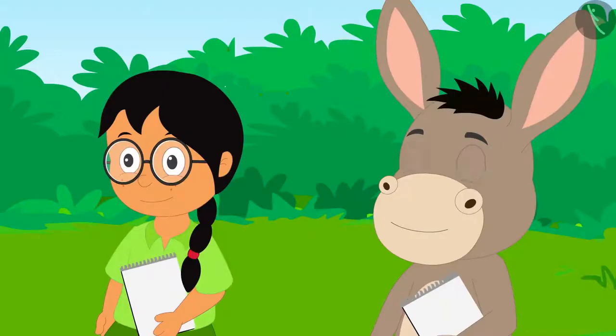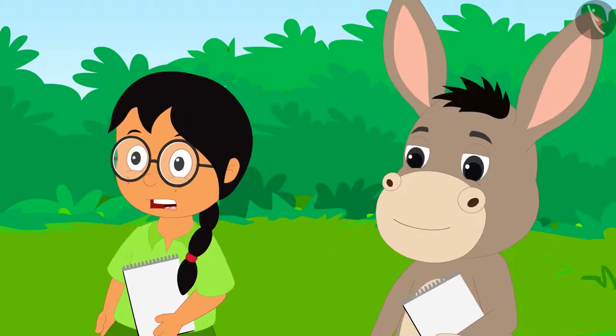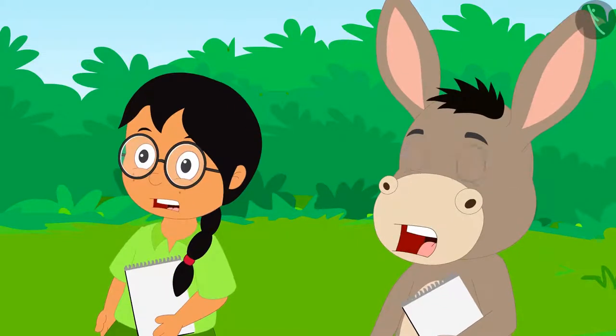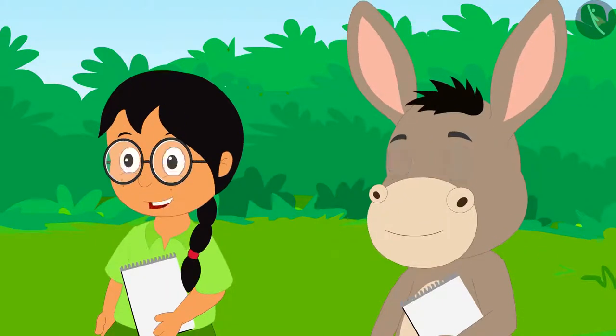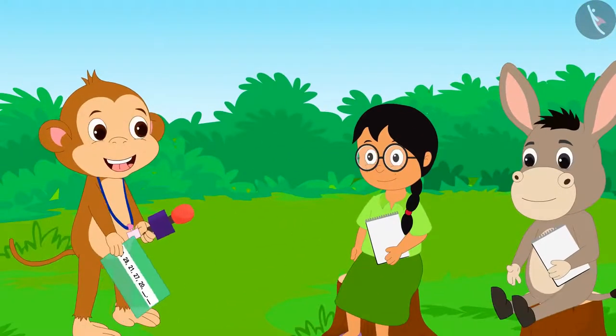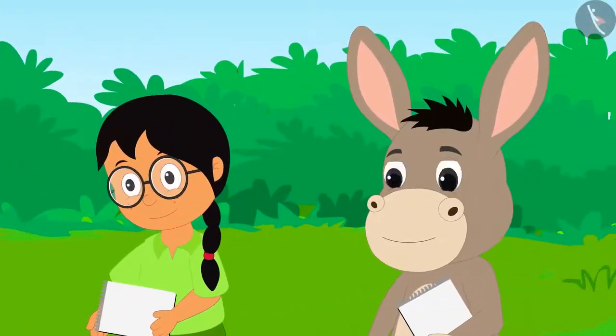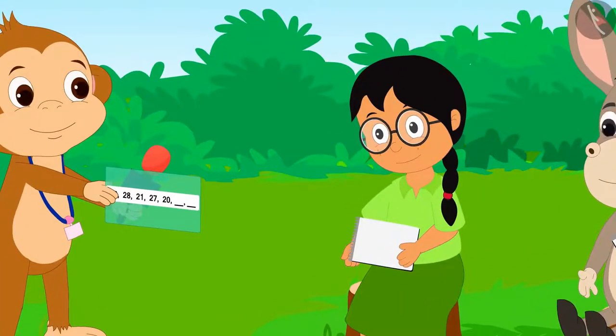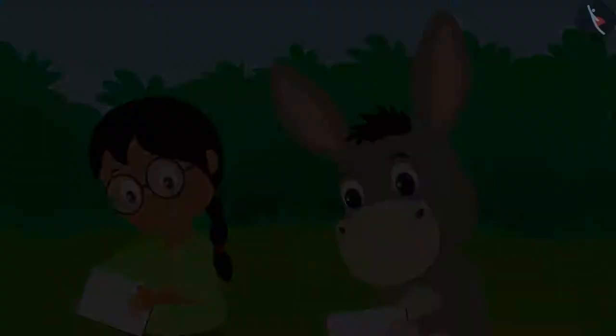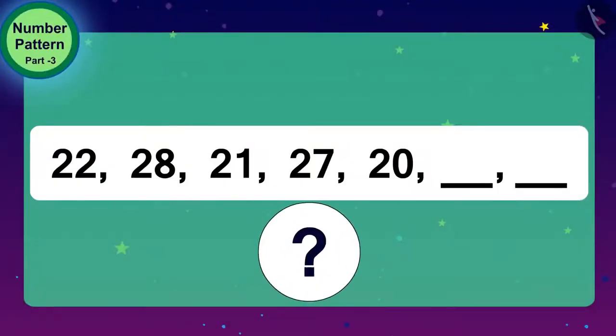Bola and Meenu were shocked to see that number pattern. Both told Babban, there is no pattern in this. Are you joking, Babbanji? Babban laughed and said, no, this is a number pattern. Look carefully. Bola and Meenu started to complete the number pattern. Children, do you understand the rule of this number pattern?